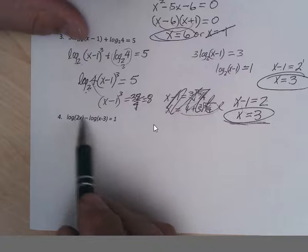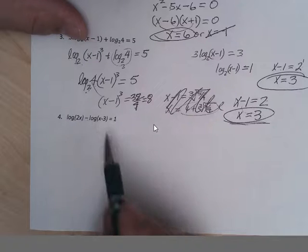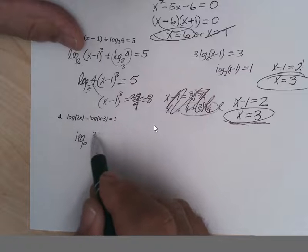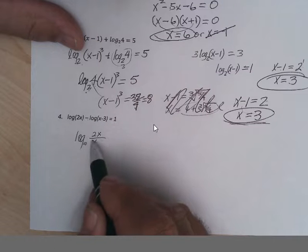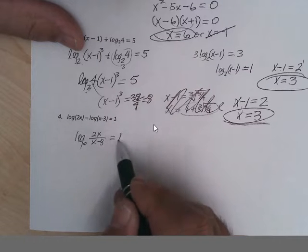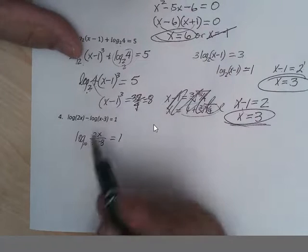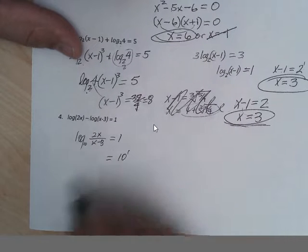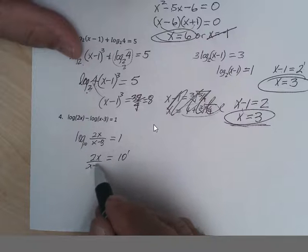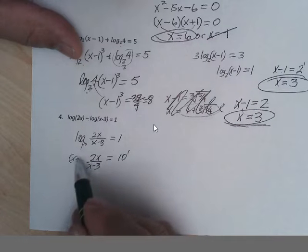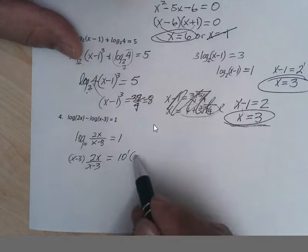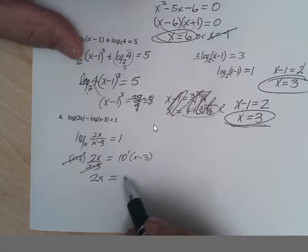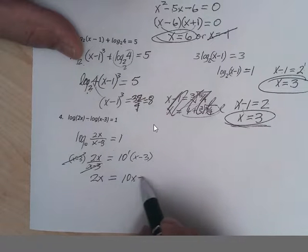Let's do this one. Subtracting, so we divide these two. This is log base 10 of 2x over x minus 3 equals 1. Changing to a power, this is 10 to the 1, or 10 equals 2x over x minus 3. Multiply by x minus 3 and I get 2x equals 10x minus 30.